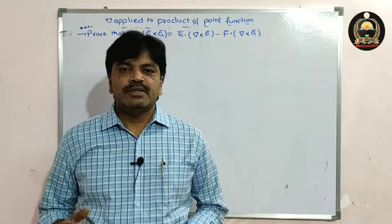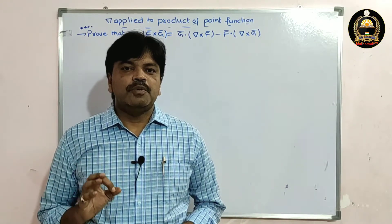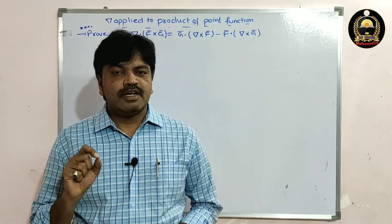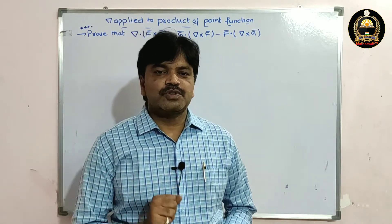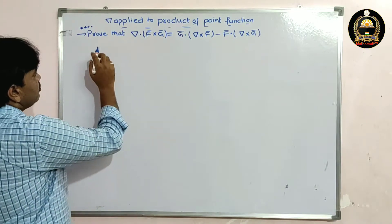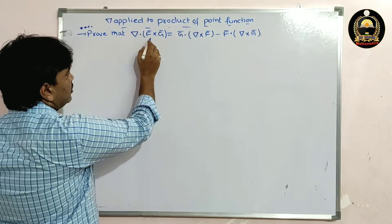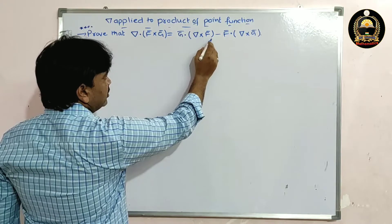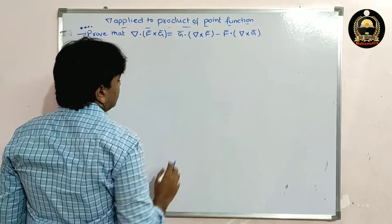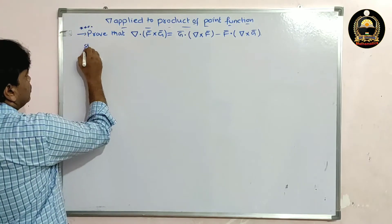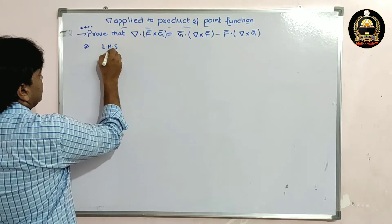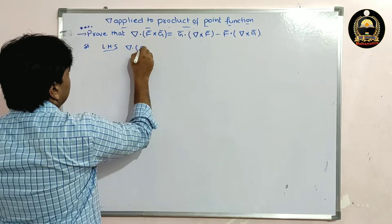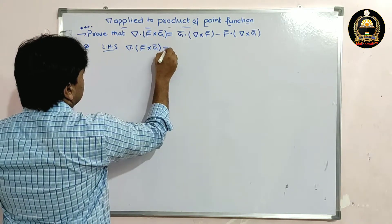Good morning friends. In this lecture I'm going to solve a property on del applied to product of vector functions. We need to prove that del dot of f-bar cross g-bar is equal to g-bar dot of del cross f-bar, minus f-bar dot of del cross g-bar. Let us take LHS: del dot of f-bar cross g-bar.